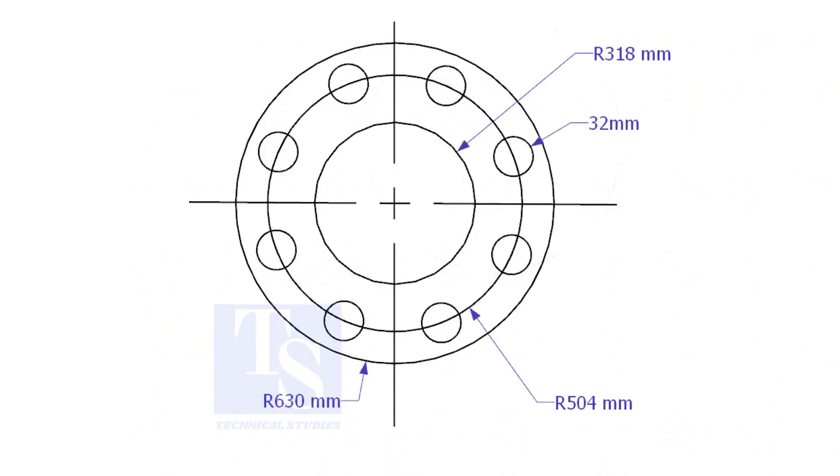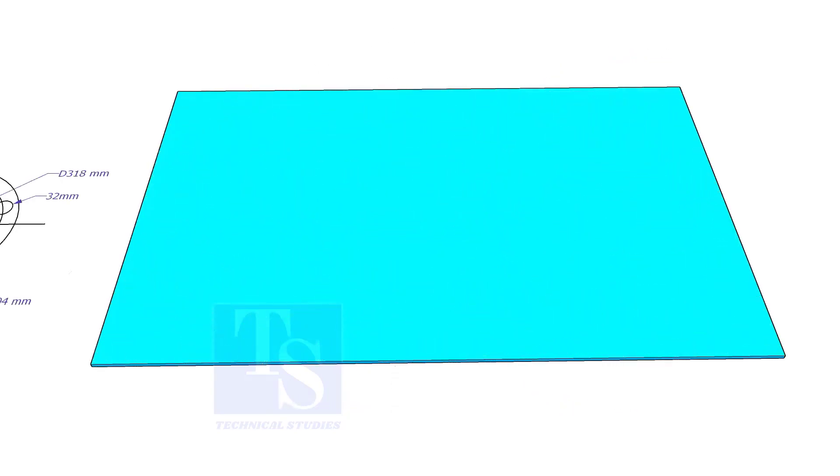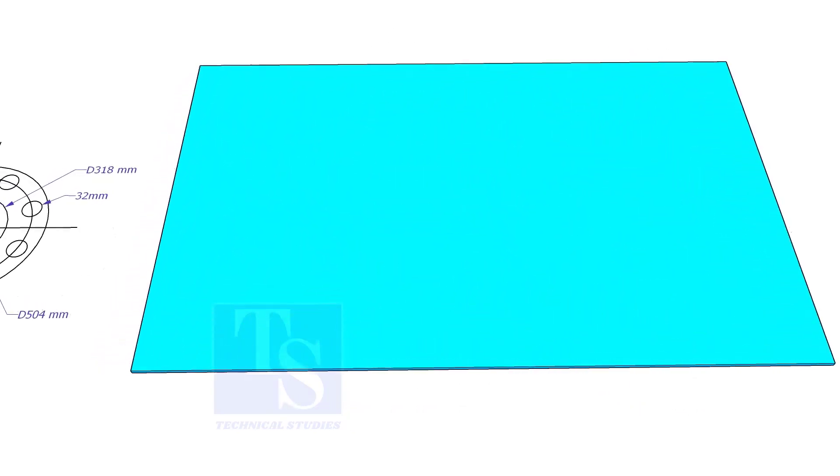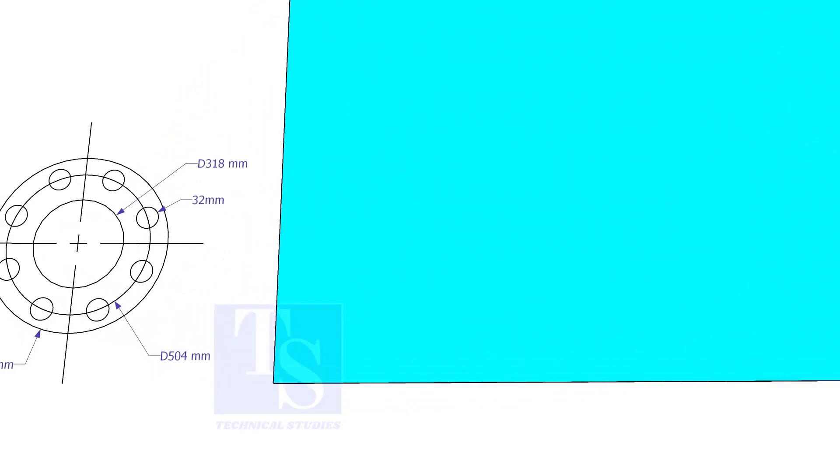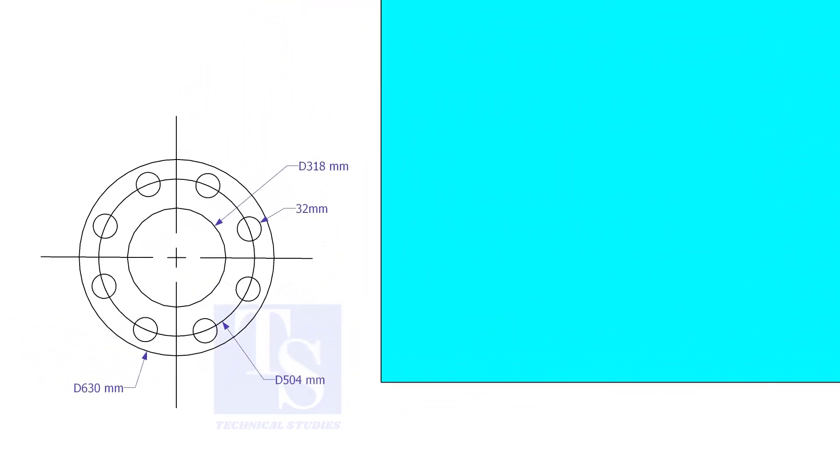Let us mark this flange. Draw a line 10 millimeters more than the half OD of the flange from the edge of the plate.